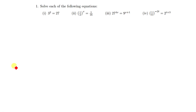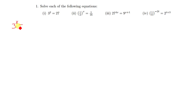The first question we have shows 3 squared is equal to 27. This is not a true statement — it can never be true. For this statement to be true, they needed to put x there instead of 2, so I'm sure it was supposed to be in that format. To solve for x, we need to make sure the bases are the same. Here, 3 is called the base and x is called the exponent or the power.